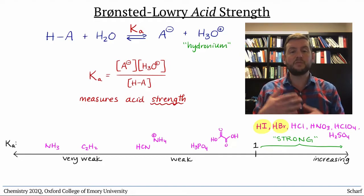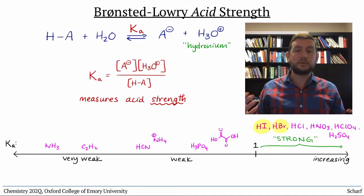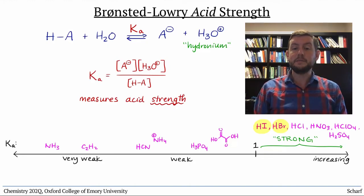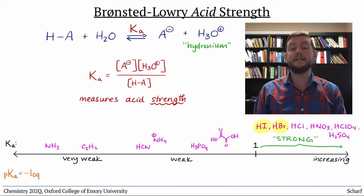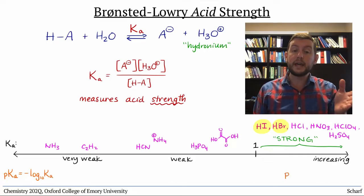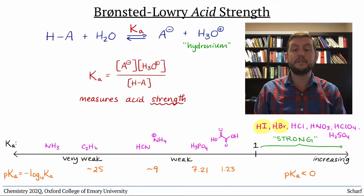Because Ka values can range from very large to very small, and the numerical values of Ka get a little cumbersome to say — for example, 6.3 times 10 to the minus 27 — chemists devised a simpler way to quantitatively describe acid strength called the pKa scale, where pKa is the negative log base 10 of the Ka. So an acid with a very large Ka will have a negative pKa, and an acid with a very small Ka will have a large positive pKa.